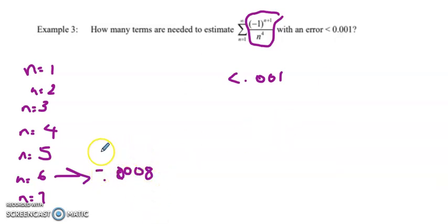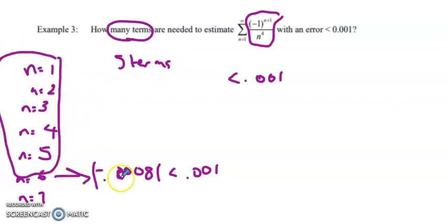So this is the value of my sixth term. And of course, for the alternating series estimation theorem, I want the absolute value of the first unused term to be less than 0.001. Because the sixth term is my error term, the answer to how many terms are needed is five terms. Because I started with n equals 1, I'm going to go to n equals 5 to get the error of less than 0.001.